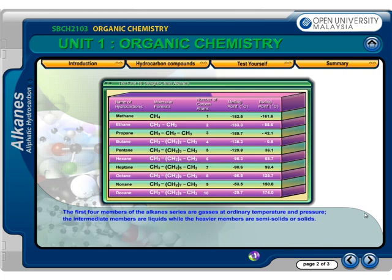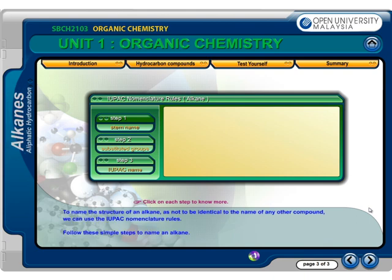The first four members of the alkane series are gases at ordinary temperature and pressure. The intermediate members are liquids, while the heavier members are semi-solids or solids. To name the structure of an alkane, so as not to be identical to the name of any other compound, we can use the IUPAC nomenclature rules.